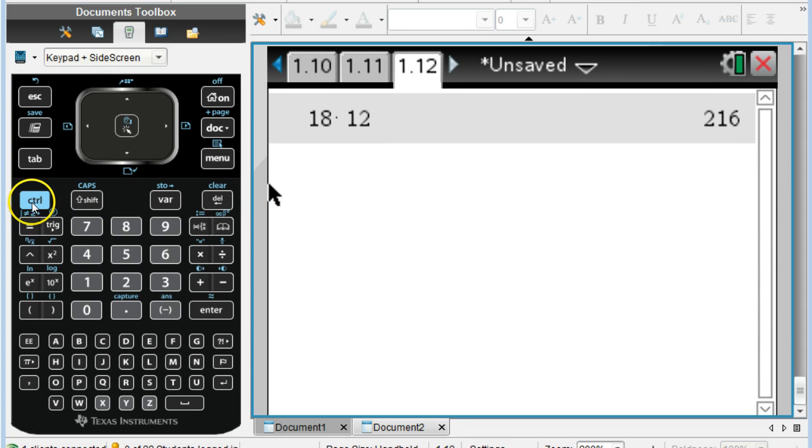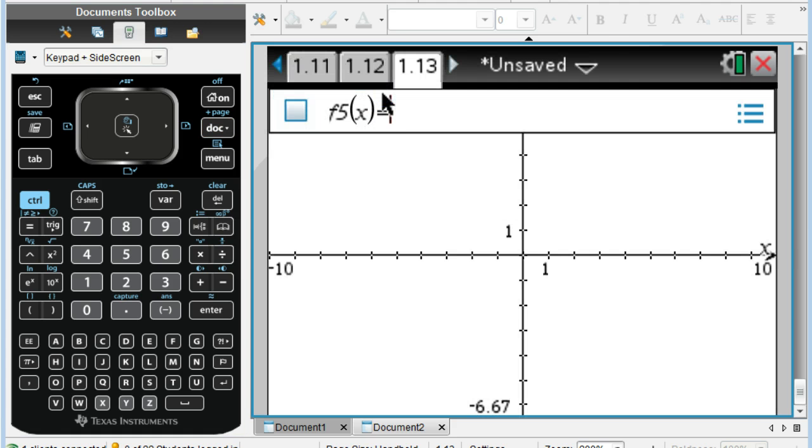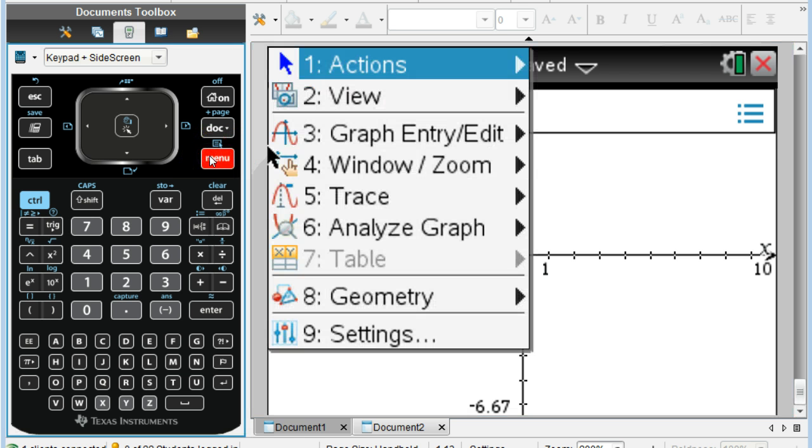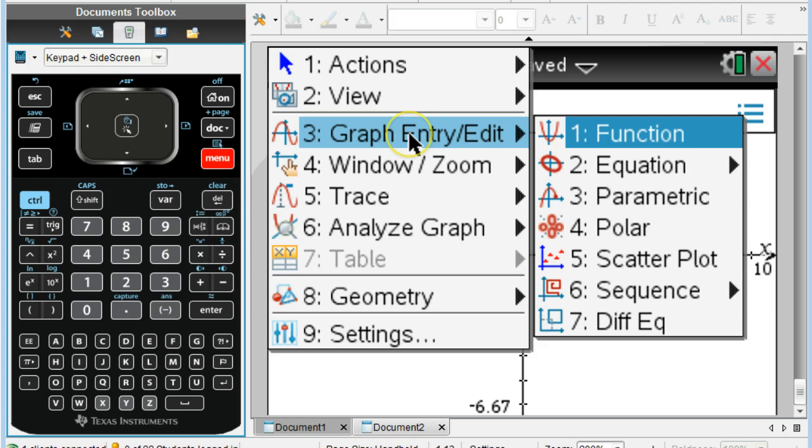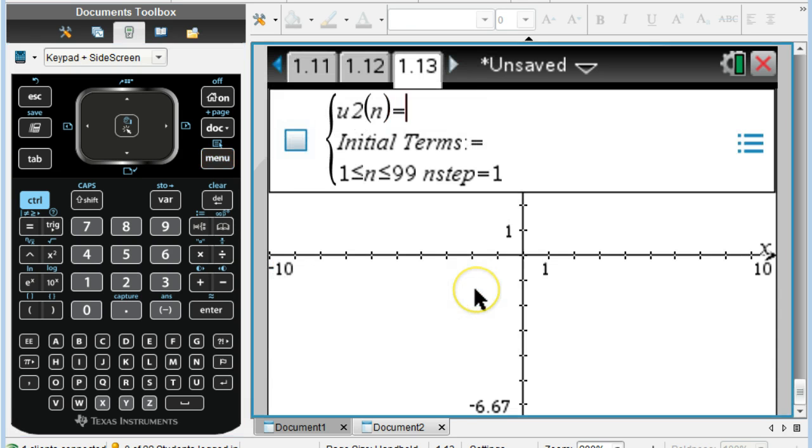What I want to do is add another page and add a graphing page. When I add this graphing page, I want to do a different graph entry. So I go to menu and do graph entry number 3. The one that I want is number 6, which is a sequence. I have U2 because I have a previous one.